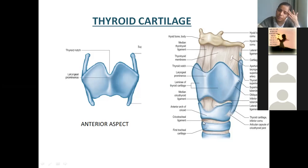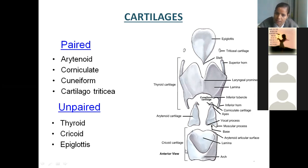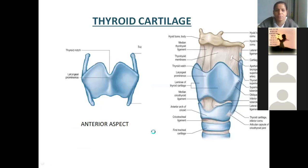We are finding thyroid cartilage very nicely, cricoid cartilage, below which you are finding tracheal rings have started. When you observe the anterior part of the cricoid cartilage, it is narrow and it looks like an arch — that's why you call it as arch of cricoid. But when you see behind, it is like a signet ring — anteriorly it is like an arch and posteriorly it is quite broad. That is called as lamina — posteriorly lamina, anteriorly arch. That's how the cricoid cartilage works.